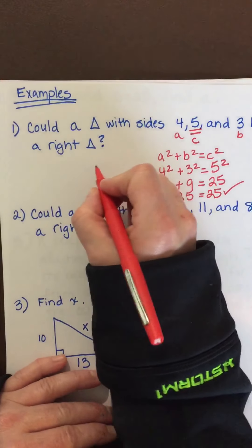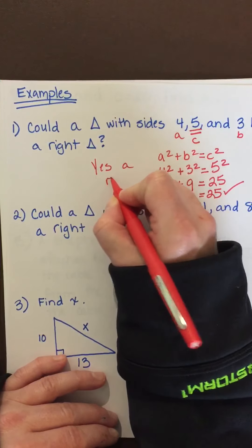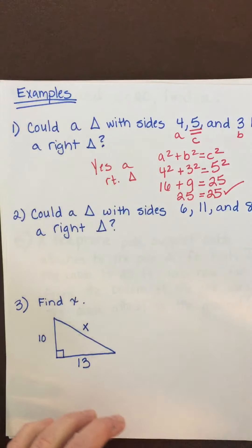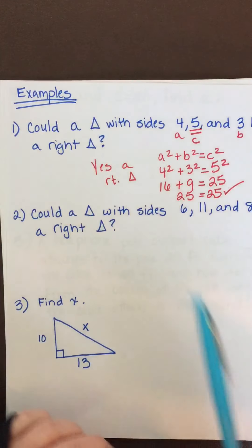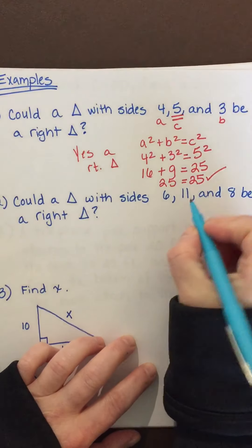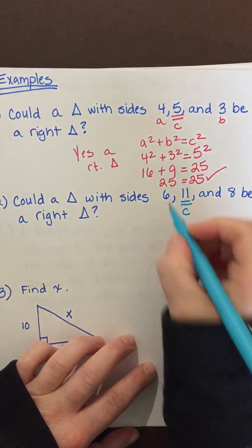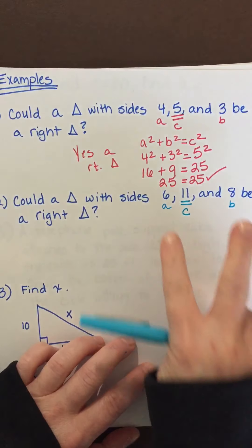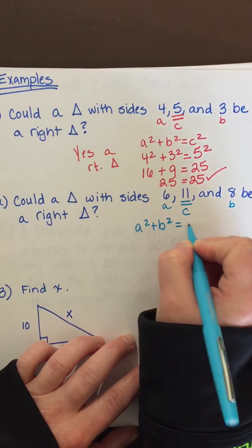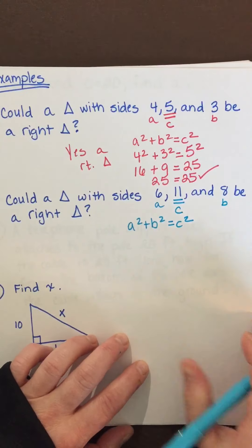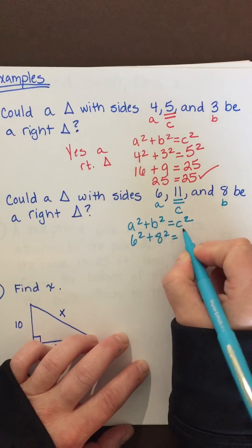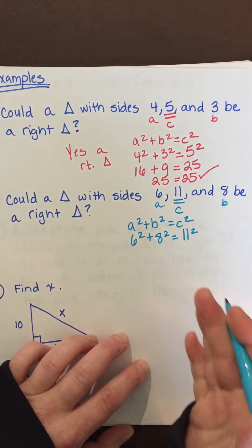Since 25 equals 25, yes — that is a right triangle. Example 2: Could a triangle with sides 6, 8, and 11 be a right triangle? Find the biggest number — 11 — that's c. Let a equal 6 and b equal 8. Write the Pythagorean theorem: a squared plus b squared equals c squared, and plug in: 6 squared plus 8 squared equals 11 squared.